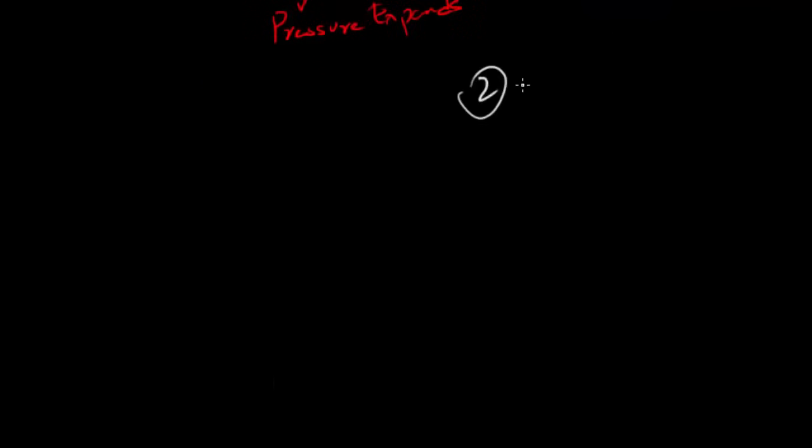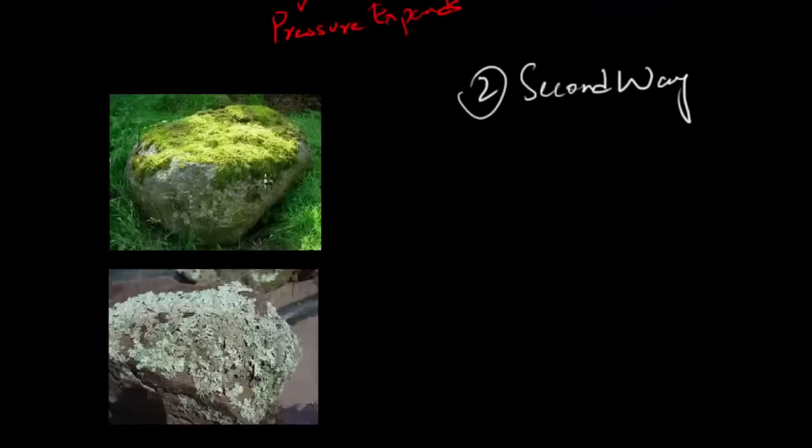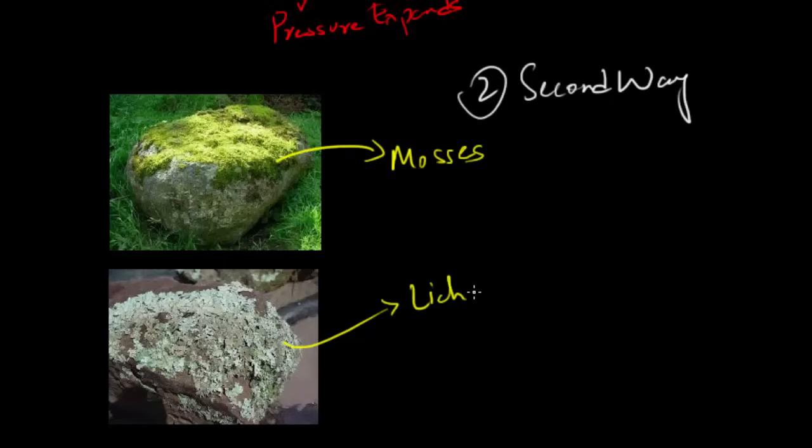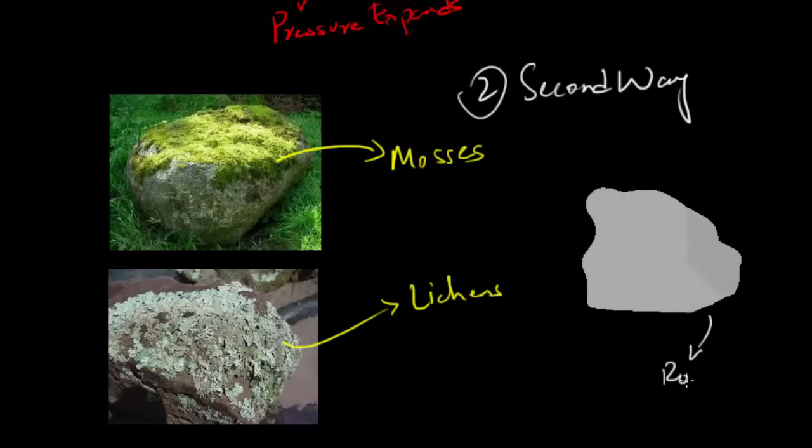Another way rocks crack is due to the actions of plants and animals. Some plants like mosses and lichens are capable of growing without soil on bare rock. While growing, their roots penetrate into the rocks by creating pores.